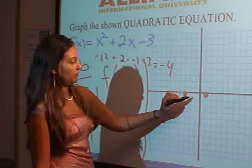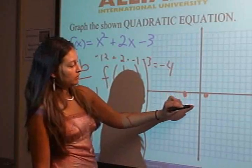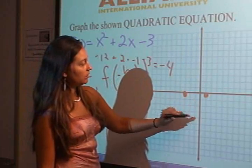So let's graph that. You go over negative 1, down 4, 2, 3, 4, right here.